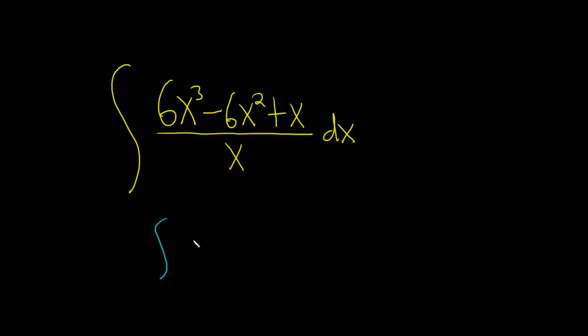This is the integral of parentheses. So it'll be 6x cubed divided by x minus 6x squared divided by x, and then plus the next one, x over x.